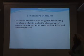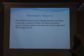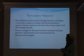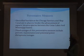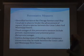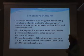As a preventative measure, electrified barriers at the Chicago Sanitary and Ship Canal are in place to hinder the advancement of aquatic invasive species between the Great Lakes and Mississippi basins. Disadvantages include periodic maintenance requirements, potential power disruption, and the fact that this measure is ineffective during flooding events when temporary connections may form between the two basins.